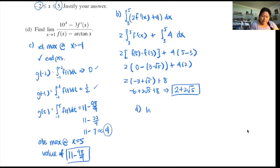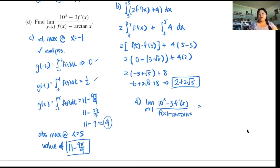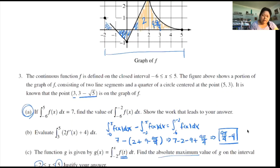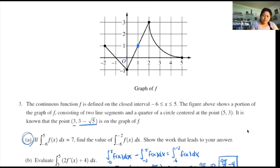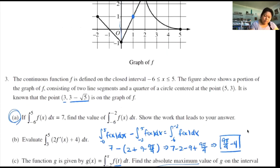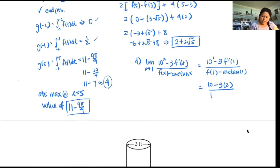Part D: find the limit as x approaches 1 of (x minus 3) times f prime(x), all over f(x) minus arctangent of x. With any limit problem, first plug in and see if you have trouble. Plugging in 1: (1 minus 3) times f prime(1), over f(1) minus arctan(1). Since x equals 1 is on the linear part of the graph, the slope there is up 2 right 1, so f prime(1) equals 2. The y-value at x equals 1 is also 1, so f(1) equals 1. Arctan(1) equals π over 4. So we get (−2)(2) over (1 − π/4), which is −4 over (1 − π/4).